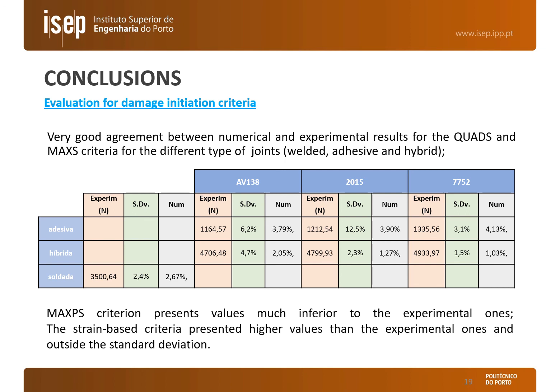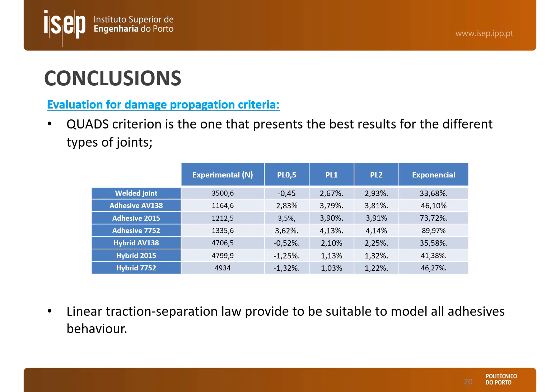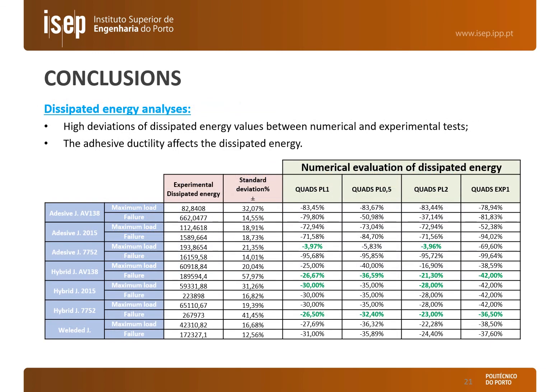Through the analysis of different damage initiation criteria, it was possible to conclude that XFEM is an accurate tool for the maximum load prediction of T-peel joints, by applying both QUAD-S and MAX-S damage initiation criteria for brittle and ductile adhesives. Regarding damage propagation, it was concluded that the linear power-law criterion is capable of accurately predicting the maximum load, while the exponential law largely overestimates it. High deviations of dissipated energy values between numerical and experimental tests were found. The adhesive ductility affects the dissipated energy: by increasing the ductility of the adhesives, it increases their plasticity and therefore increases the dissipated energy. Thank you very much.